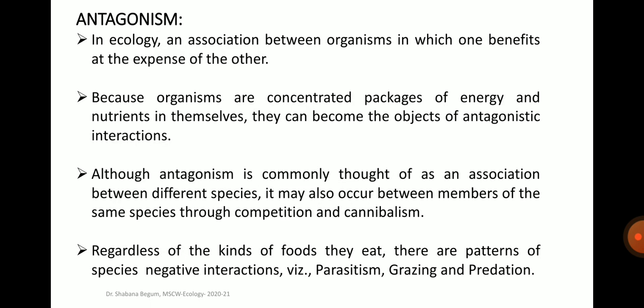What is antagonism? In ecology, it is an association between organisms in which one benefits at the expense of the other. Because organisms are concentrated packages of energy and nutrients, they can become the objects of antagonistic interactions. Although antagonism is commonly thought of as an association between different species, it may also occur between members of the same species through competition and cannibalism. Patterns of species negative interactions include parasitism, grazing and predation.